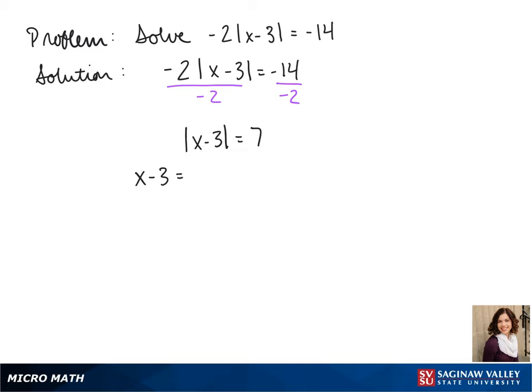So now we can break it into our two parts: x minus 3 equals positive 7, or x minus 3 equals -7.